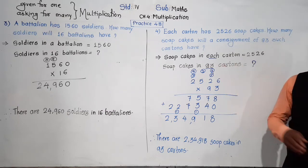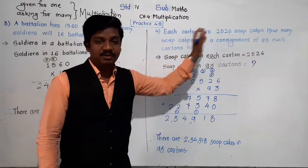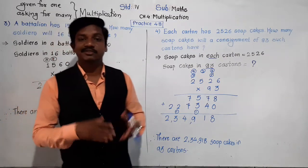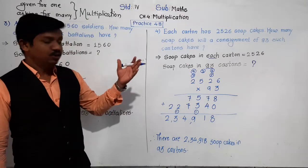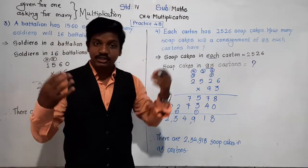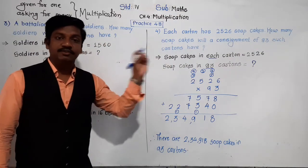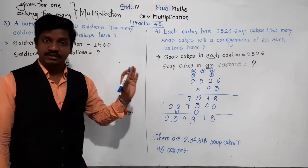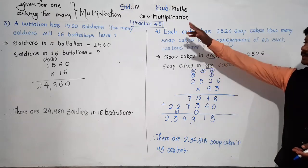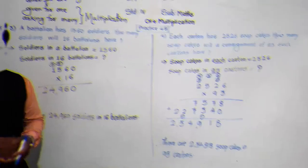In this way we solve word problems based on multiplication. In an exam, problems won't be labelled - they will be mixed: some addition, subtraction, multiplication, and division word problems. You have to understand the situation and identify which operation to do. When there is given for one and asking for many, you have to do multiplication. Now pause this video and try these problems in your notebook. If you have any doubt regarding these word problems, you can ask. Thank you for today and have a nice day.